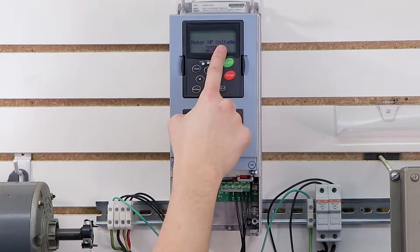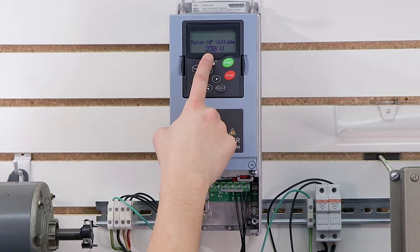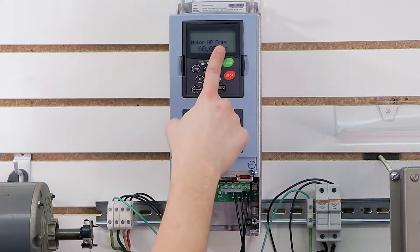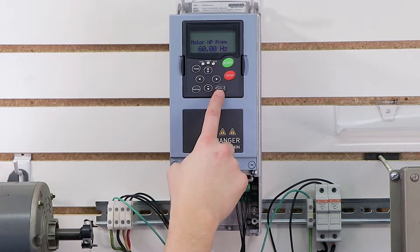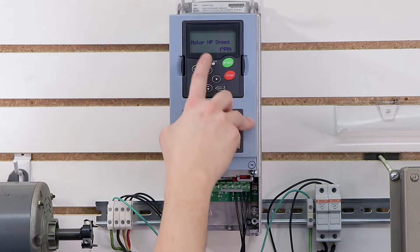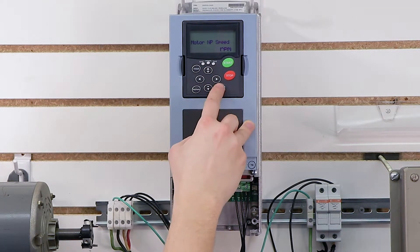My motor's nameplate voltage, I'm going to set at 230 volts. Again, that's what's on my nameplate. My motor's nameplate frequency, same. It's going to be 60 hertz. Again, that's on my nameplate. Motor's nameplate speed, 1720 RPM. That is also correct. I'm going to press enter again.